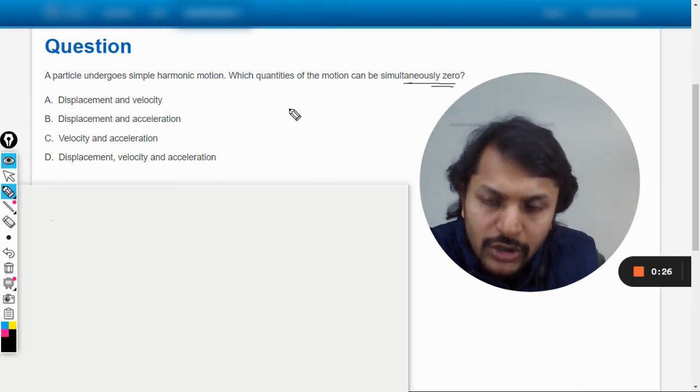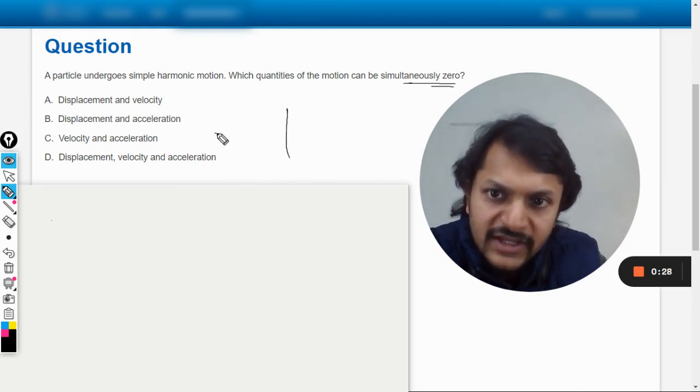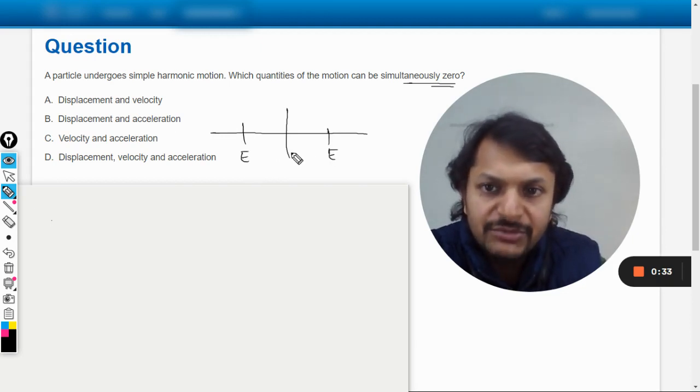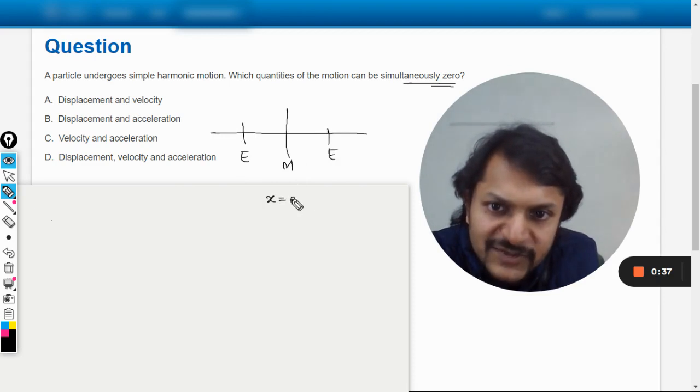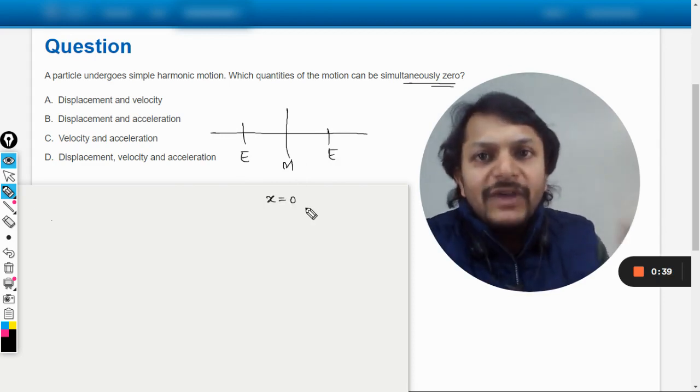Let me draw this. This is the mean position, and these two are the extreme positions - extreme right, extreme left, and this is mean. So at the mean position, the displacement is zero.